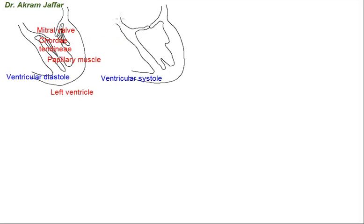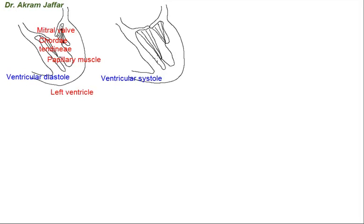During ventricular systole, the papillary muscles contract prior to contraction of the ventricle. This results in tightening of the chordae tendineae. The tightening of the chordae tendineae draws the cusps of the mitral valve together, and this will prevent ventricular blood from passing back into the atrium at the time of ventricular contraction.